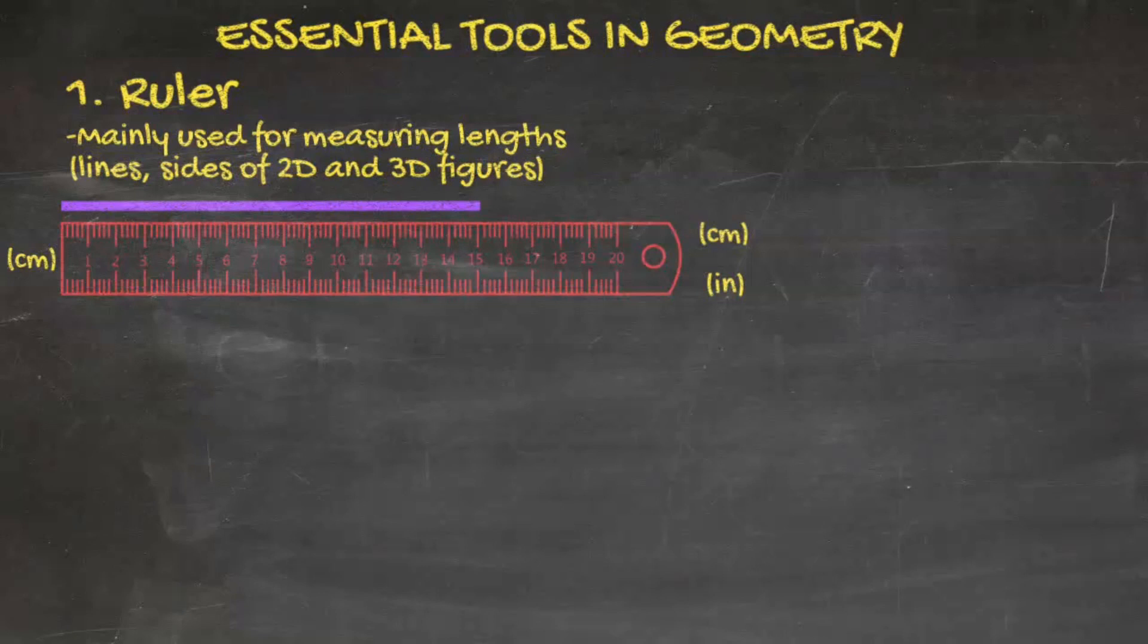For example, if we want to measure this line, if the line starts at the zero mark, which it does, we just have to look at the mark at the very end of the line. In this case, the mark at the very end is 15. Therefore, the length of the line is 15 centimeters.